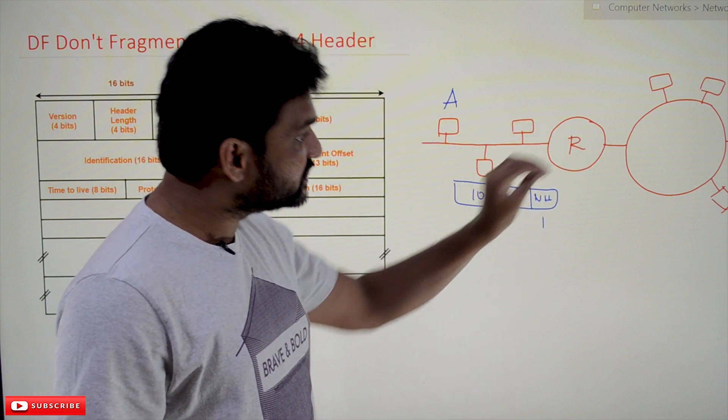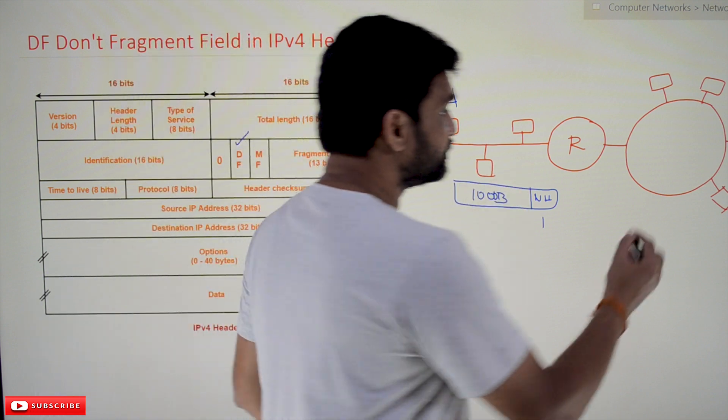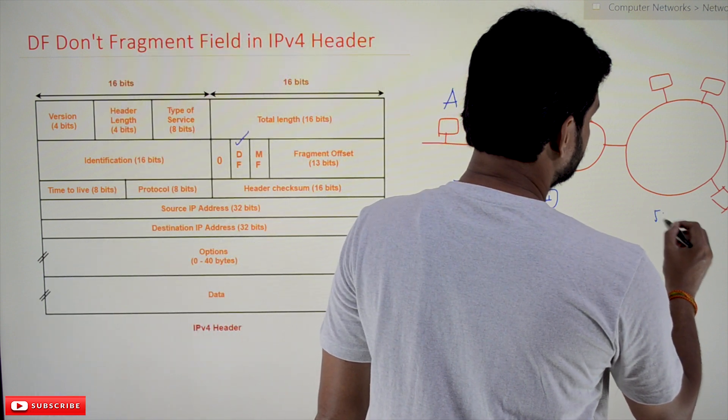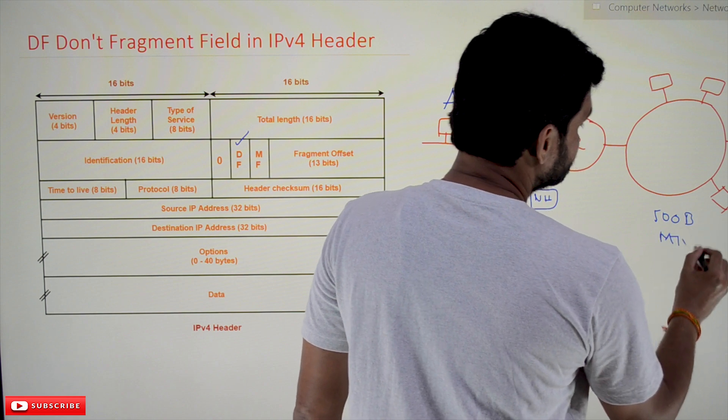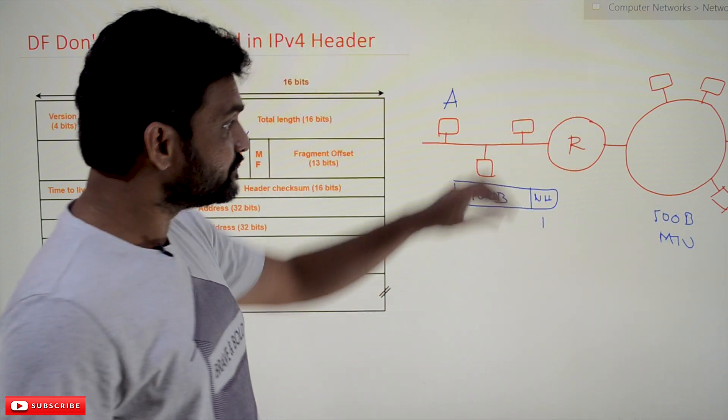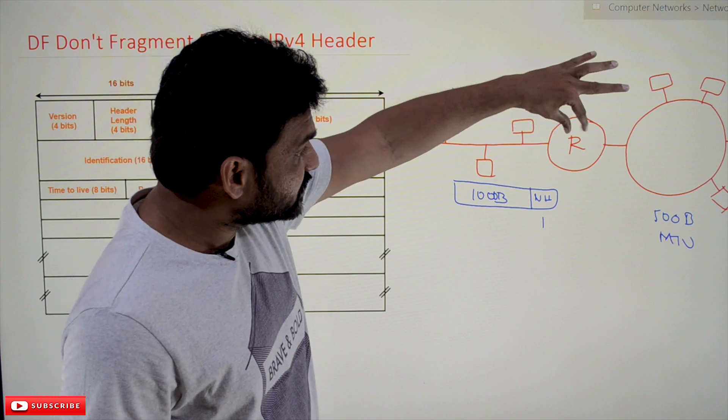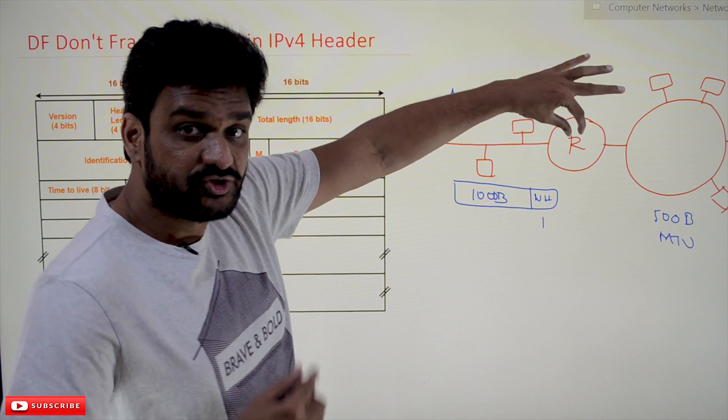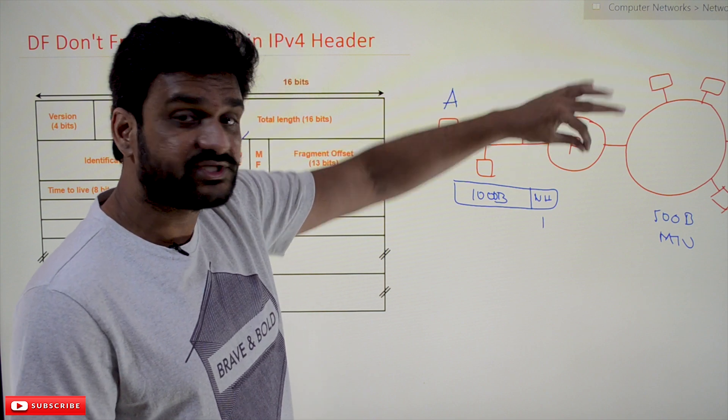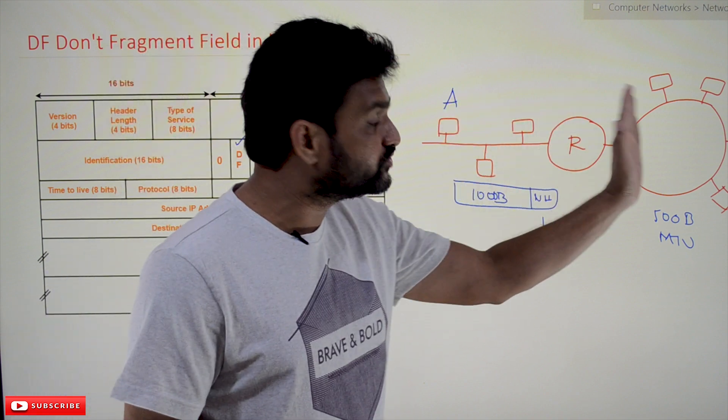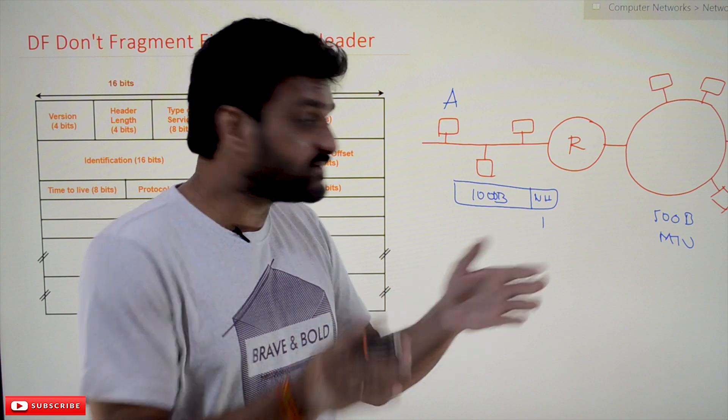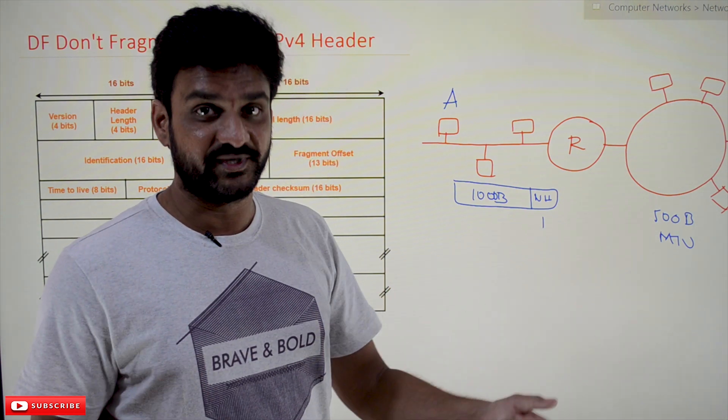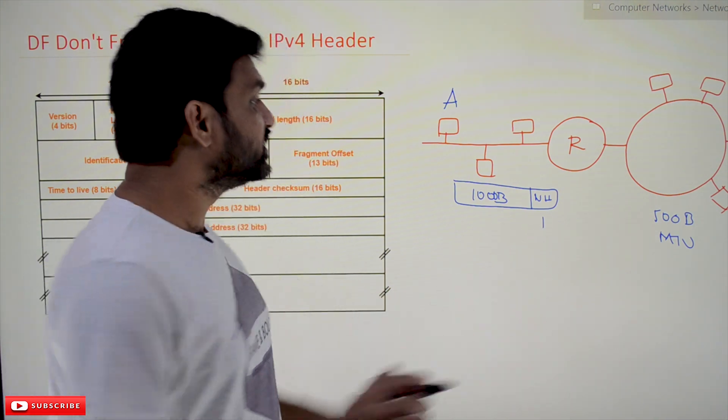For example, assume the MTU for this network is 500 bytes of data. When the router receives this packet, usually what it will do is, based upon the network to which this packet has to be transmitted, it will fragment this packet into small pieces. But if the DF is set...